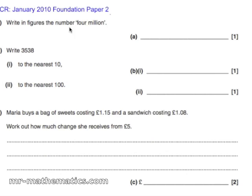We are going to write the figure 4 million, which is 4 and 6 zeros.